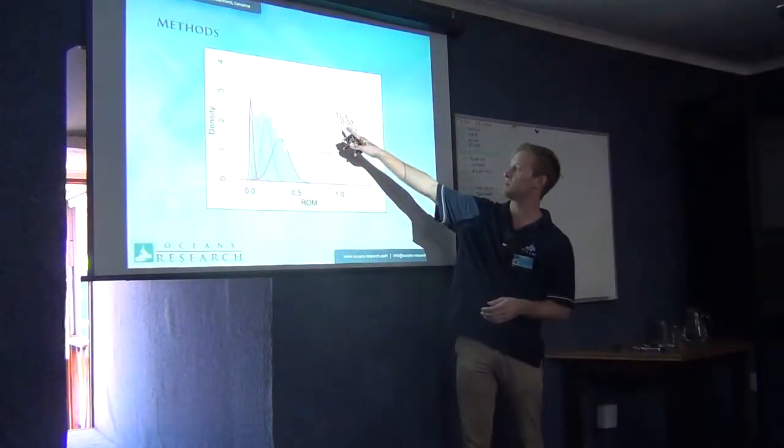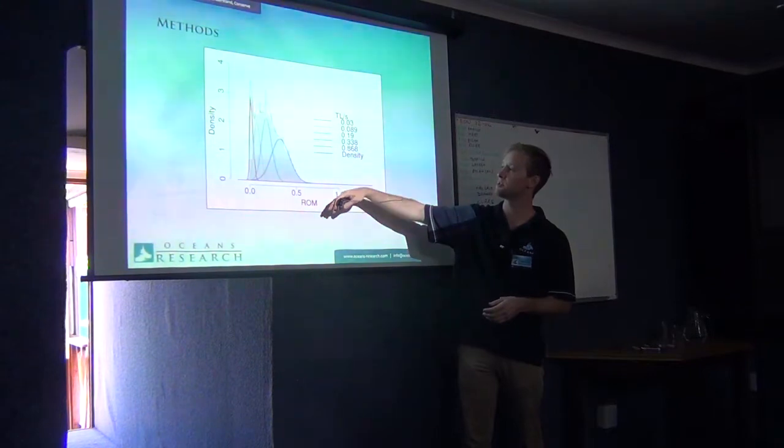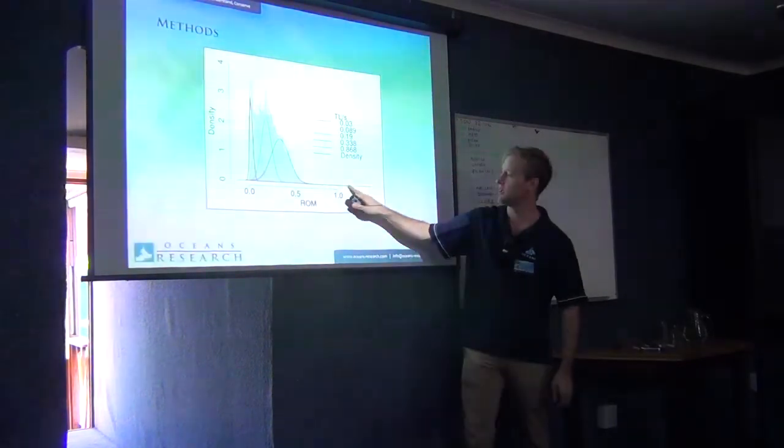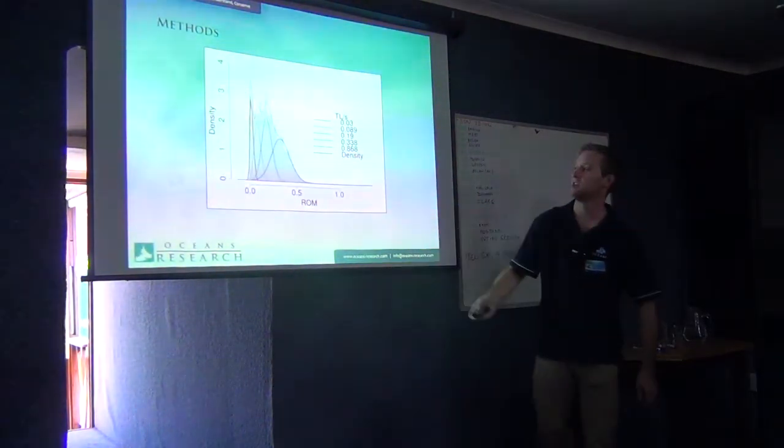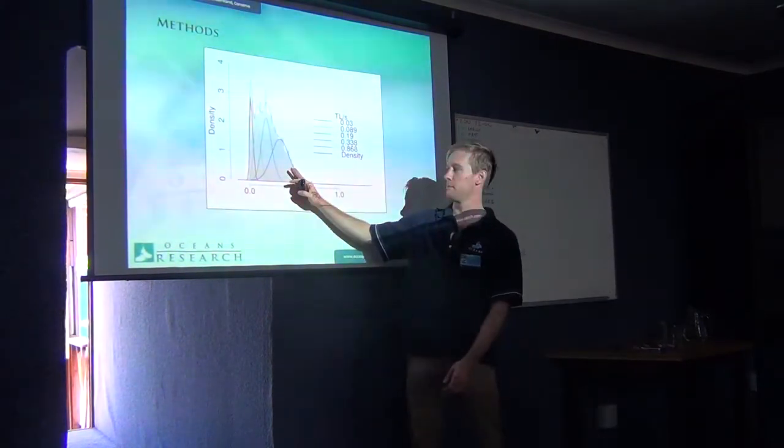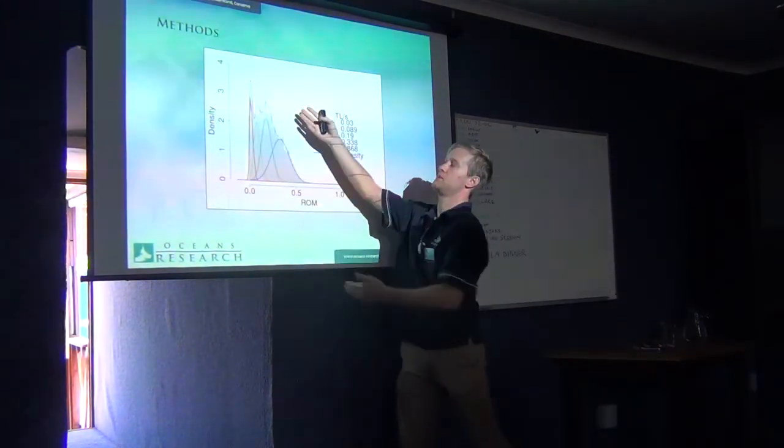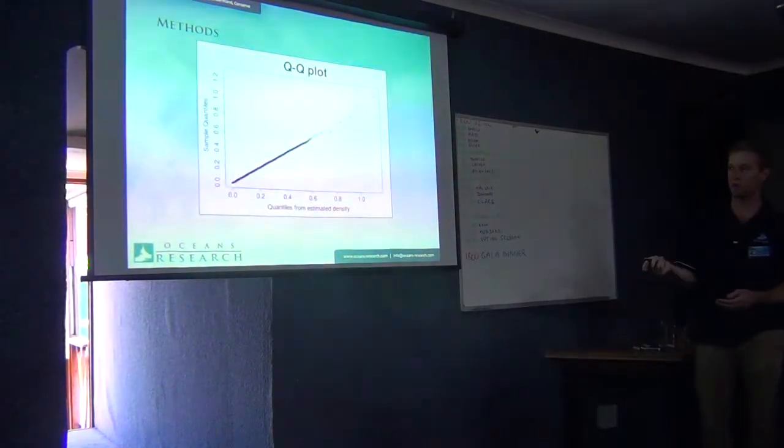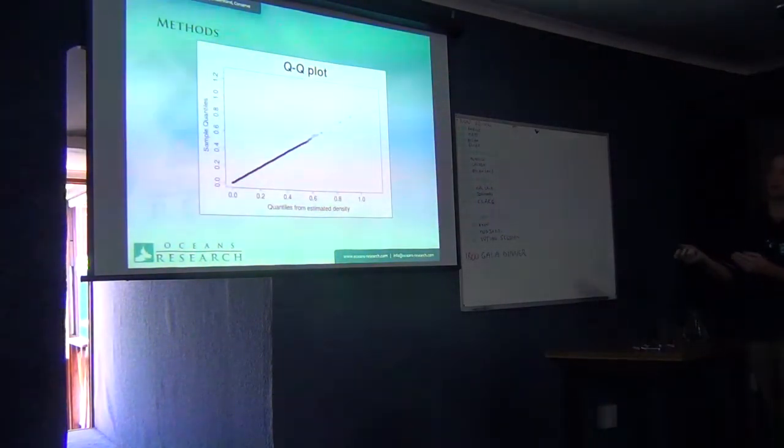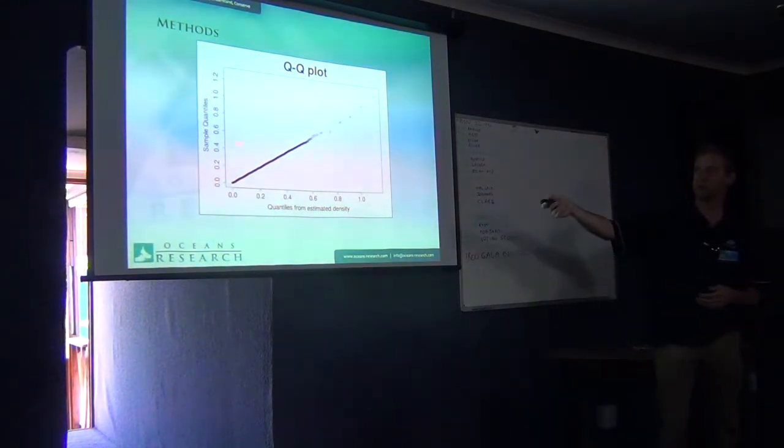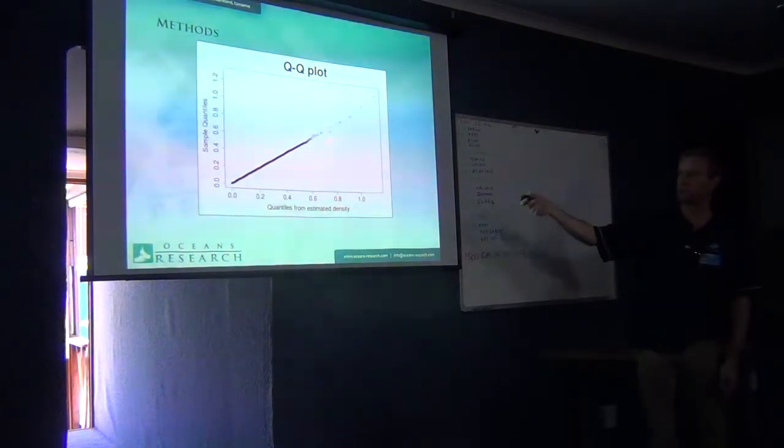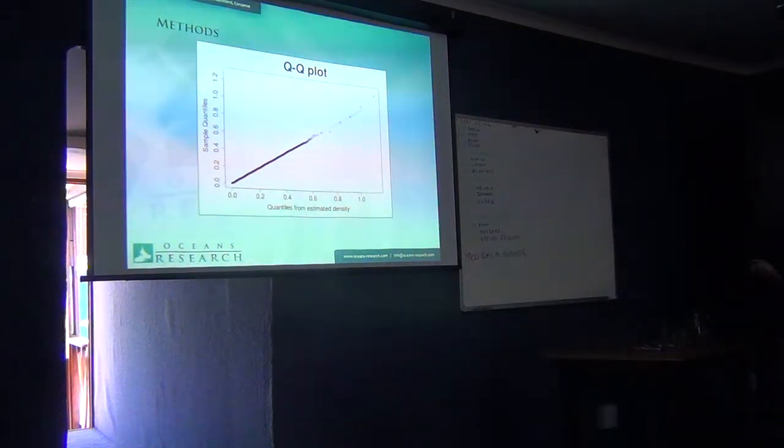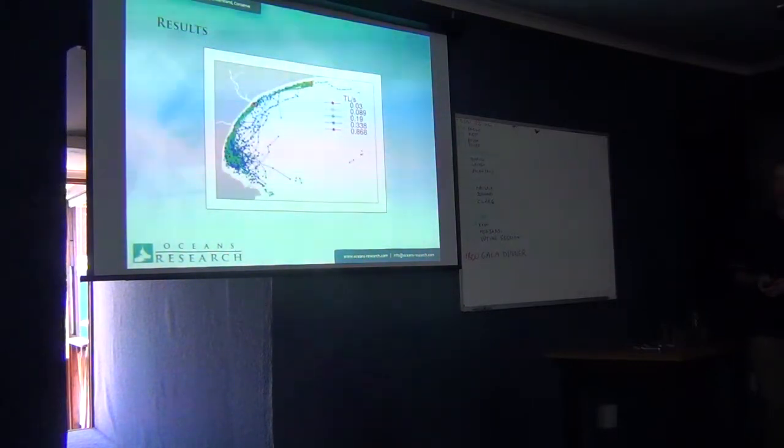The method uses an expectation maximization algorithm, and that's how it develops the parameters of the model - the means and the standard deviations of the component normal distributions. Then it uses one of the penalized information criterions to decide how many of those distributions comprise our observed distribution. So we've got here five underlying models in our observed distribution. The first one, the mean is centered about 0.03 total lengths per second, and then we get all the way up here with some of these faster ones. The black line is the estimated density if you were to sum all of these distributions.